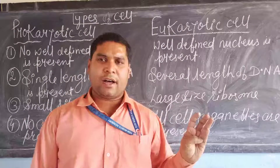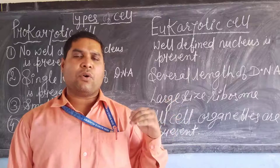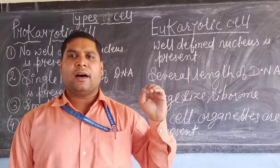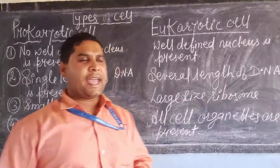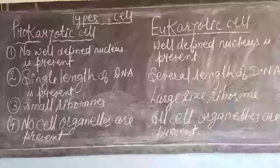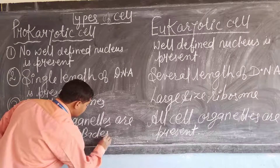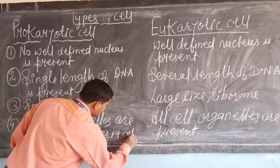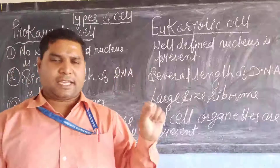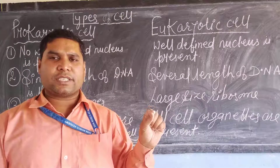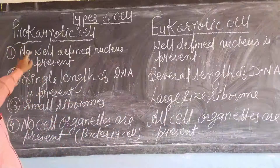All cell organelles are present in eukaryotic cells — like mitochondria, centrosome, Golgi apparatus, lysosome, ribosomes, and almost all. Whereas in the prokaryotic cell, no cell organelles are present. The examples of prokaryotic cells are bacterial cells and blue-green algae, known as cyanobacteria.